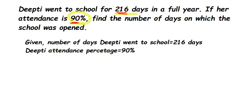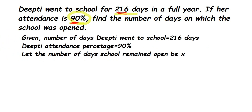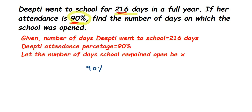Now we're going to start framing it. We know these two things, but we don't know the total number of days the school was open. So we're going to assume a variable — let the number of days the school remained open be x. We have assumed variable x, and now we're going to start solving it. Let me frame the equation.